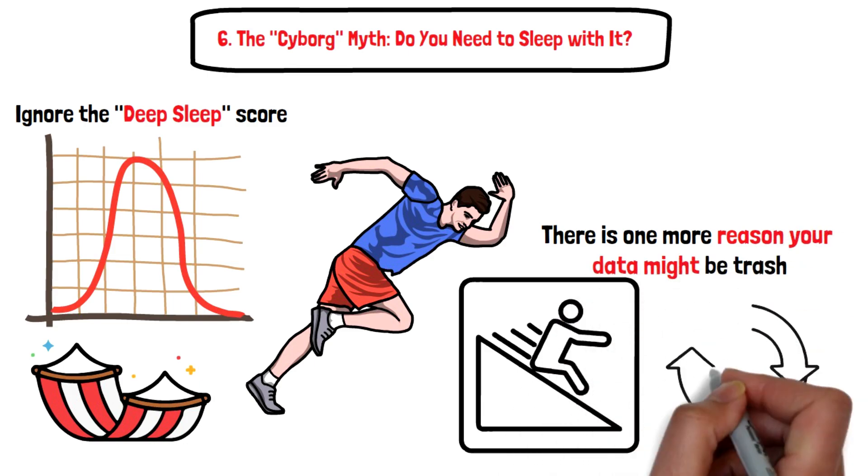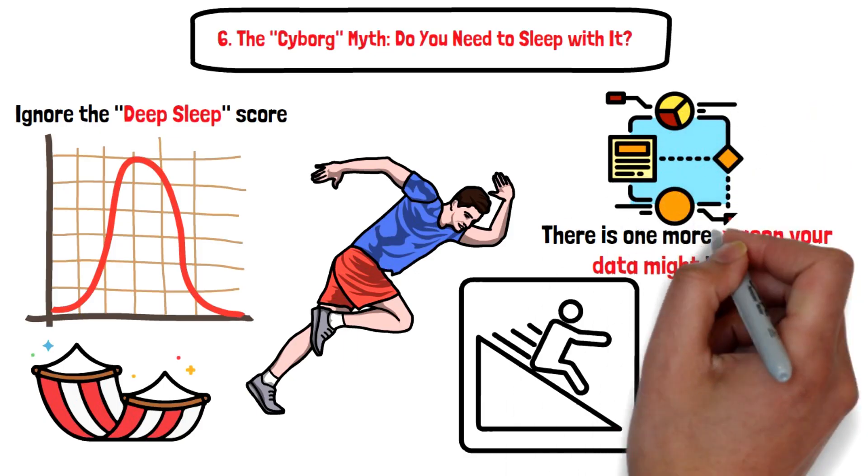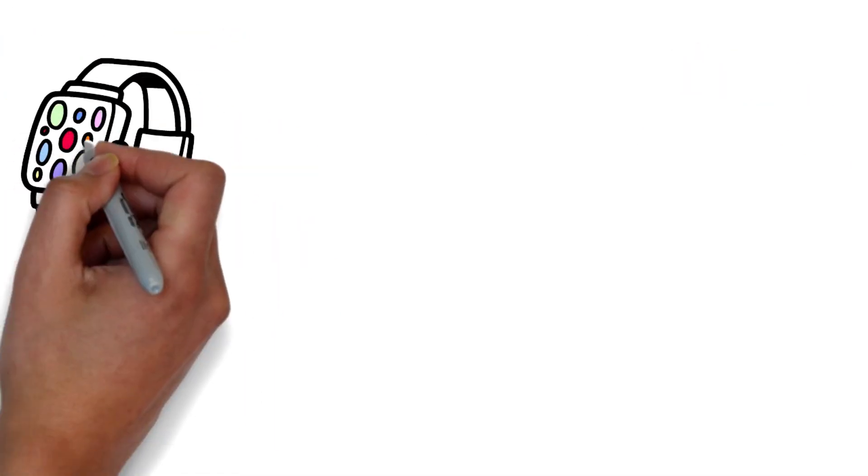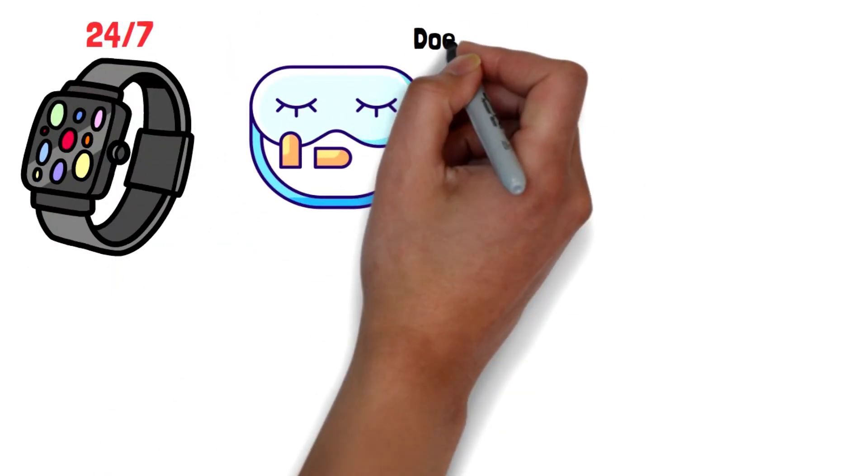Six, the cyborg myth: do you need to sleep with it? There's one more reason your data might be trash—inconsistency. For the algorithms to work, they need a baseline. They want you to wear the watch 24/7, but I know many of you hate sleeping with a chunky plastic brick on your wrist.